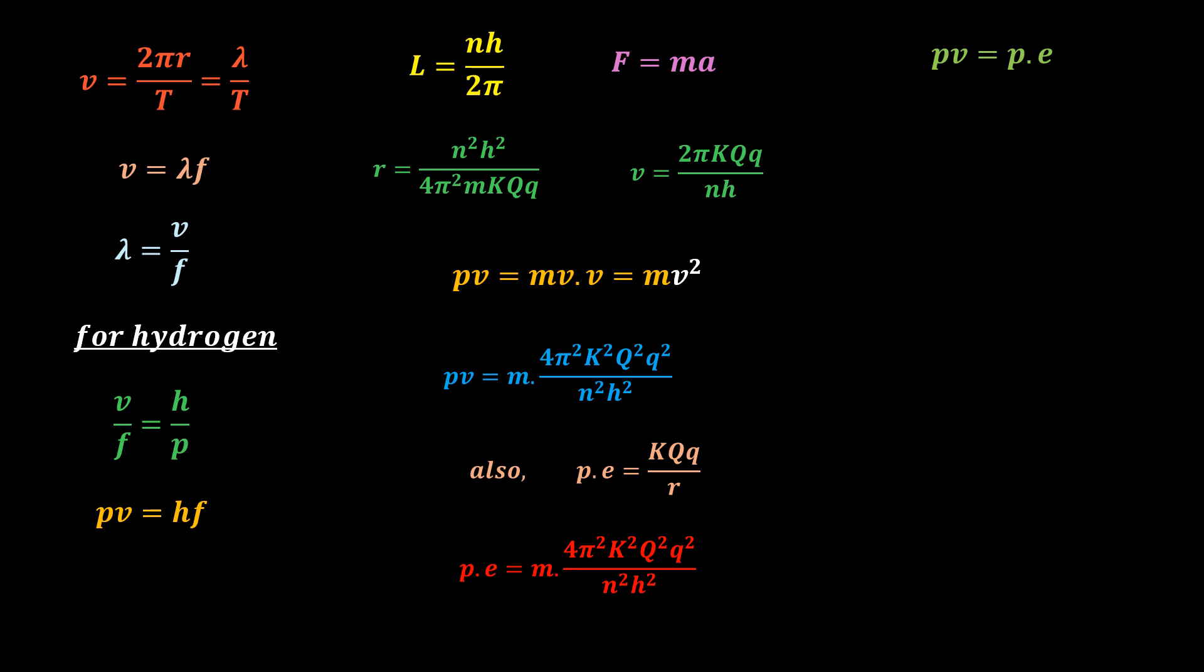Back to our expression, pv equal hf. This becomes E equal hf, the Planck-Einstein equation. Please bear in mind that E is the potential energy, not the total energy, and the equation is for hydrogen.